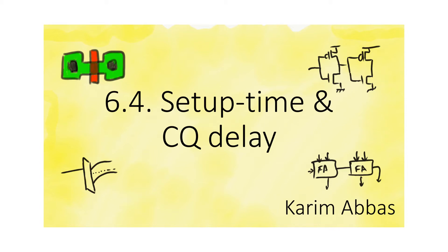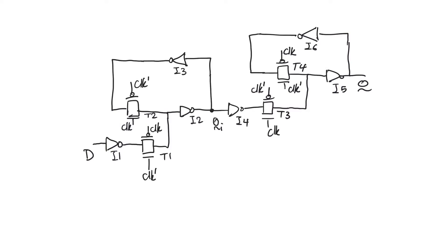In the previous video we understood that timing for a register includes two specific delays: setup time and TCQ. The register consists of a master latch which is active low and a slave latch which is active high. The master latch covers from D to QI and the slave latch from QI to Q. The questions now are: what is setup time, how much is it, why does it occur, and what happens if we do not respect it? And if we do respect setup time, what is TCQ and how much is it?